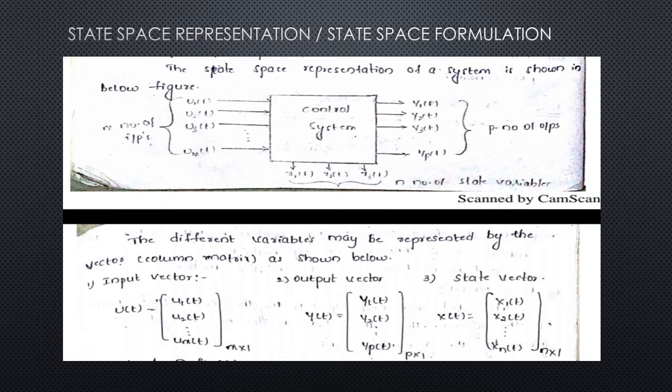Now let us see what is meant by state space representation or state space formulation. To represent a control system in state space, the system requires some number of input variables, some number of output variables, and some number of state variables. When the system is indicated by all its input, output, and state variables, that representation is known as state space representation.